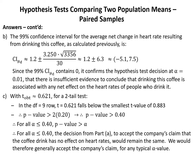In Part B, the 99% confidence interval for the average net change in heart rate, as calculated previously, goes from minus 5.1 to 7.5. Since this 99% CI for muD contains zero, it confirms the hypothesis test decision at alpha equals 0.01 that there is insufficient evidence to conclude that drinking this coffee is associated with any net effect on heart rates. In Part C, with t obtained equal to 0.621 for this two-tailed test, we find our value falls below the smallest t value of 0.883 in the DF equals 9 row. Therefore, the p-value is greater than 2 times 0.20, meaning the p-value is greater than 0.40.